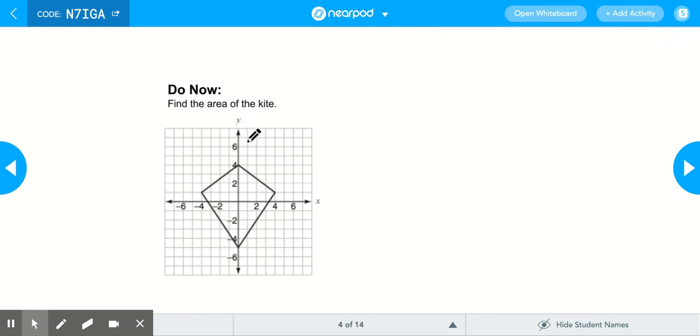So here we go guys, area of the kite. Let's find the two diagonals. Let's do the first diagonal. The first diagonal goes from negative 4 all the way to 4. So the blue diagonal, if you count the boxes, is going to give you 8. Remember, they ask for the area of the kite.